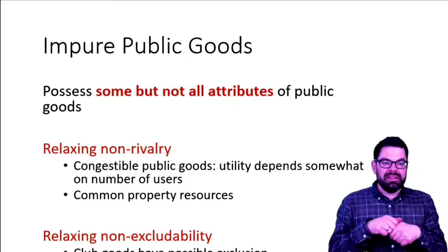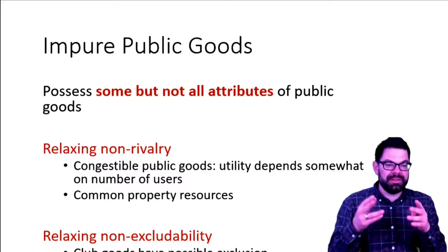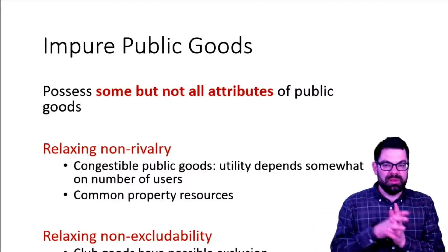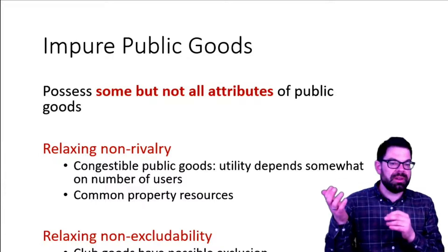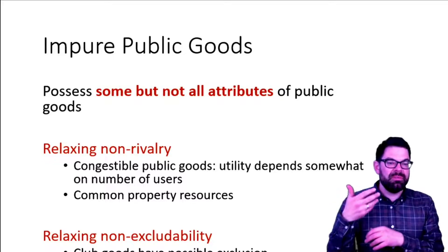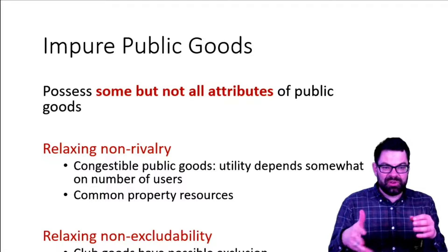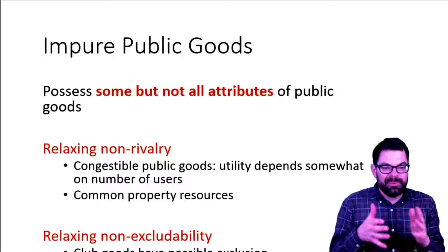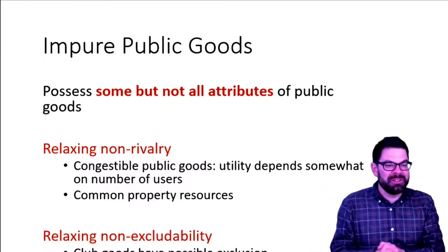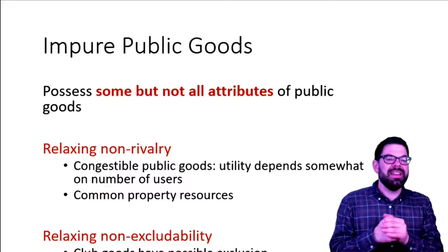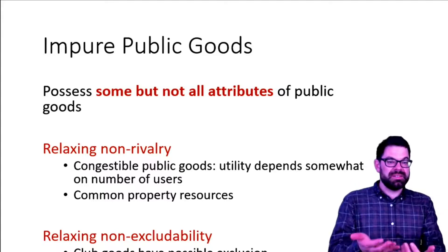Not all public goods are pure in the sense of being both non-excludable and non-rivalrous. There are also impure public goods — goods that possess some but not all attributes of public goods. For example, there are congestible public goods, for which a park is a good example. The first and second person entering St. Stephen's Green won't feel like they're intruding on each other's space, but if all of Dublin decides to go there — as on a sunny Sunday — it gets quite congested. The more people use it, the lower the enjoyment for any particular person.